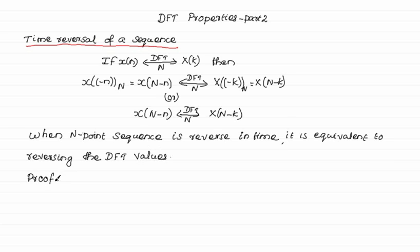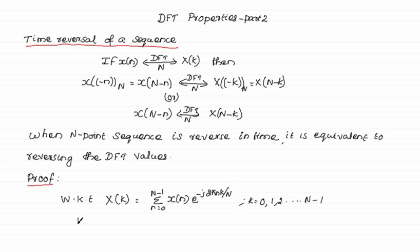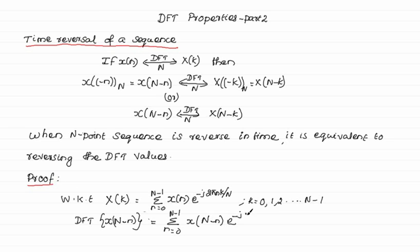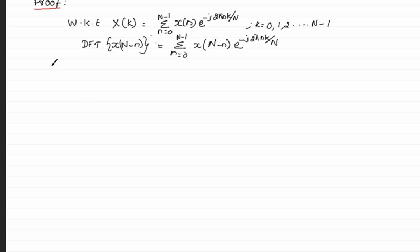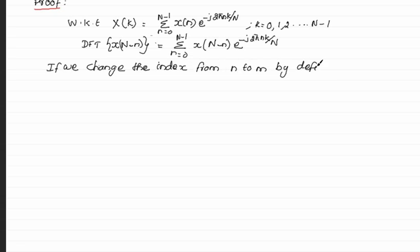Now let us see the proof. We know that the DFT of x(n) is given by X(k). We are going to take the DFT of x(N-n), so in place of x(n) we replace it with x(N-n). We change the index from n to m by defining m equal to N minus n.